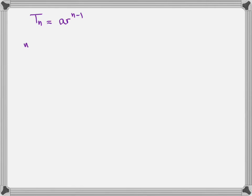Tn is any particular term. A is the first term. R is the multiplication factor, the common ratio. The definition of common ratio is the second term divided by the first term, and n is the number of the term.